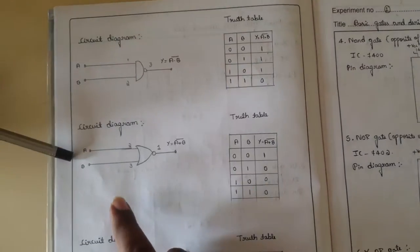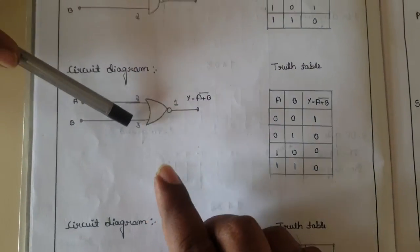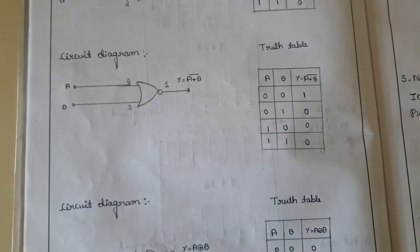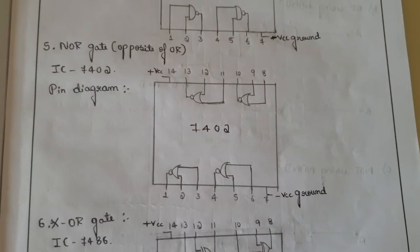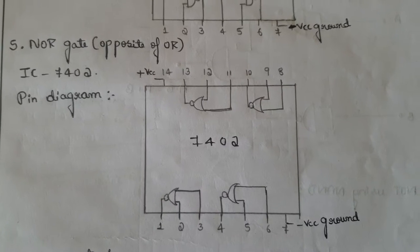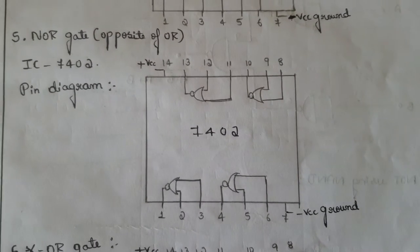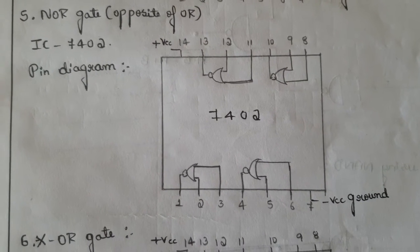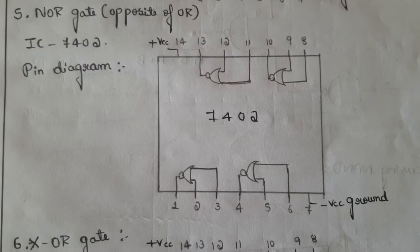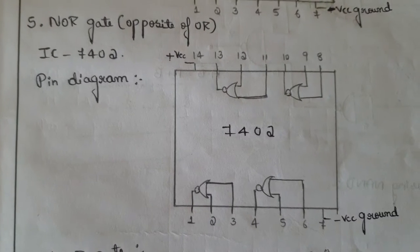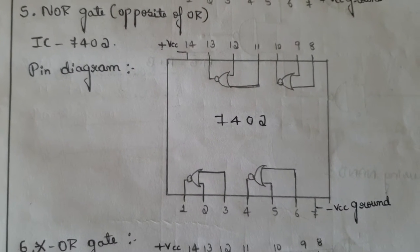First we shall take up the NOR gate. As you can see the diagram, in the NOR gate the pin numbers change: the first pin acts as the output pin, and the second and third pins act as input pins. From the circuit diagram, second and third act as input and first acts as output. Fourth acts as output, 5 and 6 act as input, 9 and 8 are input, 10 is output, 11 and 12 are input, and 13 is output. Pin 7 is connected to ground and pin 14 is connected to power supply or VCC.